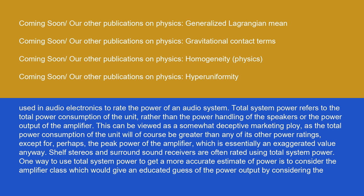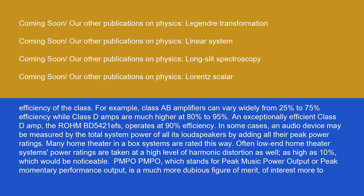One way to use total system power to get a more accurate estimate of power is to consider the amplifier class, which would give an educated guess of the power output by considering the efficiency of the class. For example, class AB amplifiers can vary widely from 25% to 75% efficiency, while class D amps are much higher at 80% to 95%. An exceptionally efficient class D amp operates at 90% efficiency.